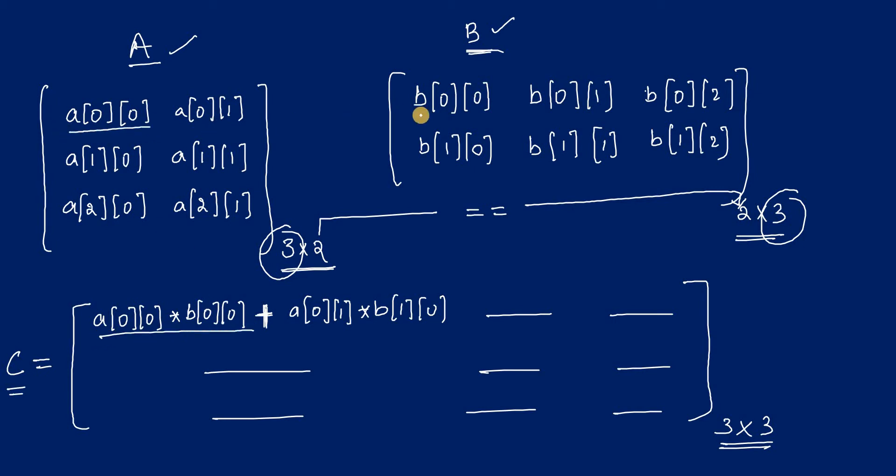A[0][0] into B[0][0] plus A[0][1] into B[1][0]. This is how we can calculate the first element in the resultant matrix.